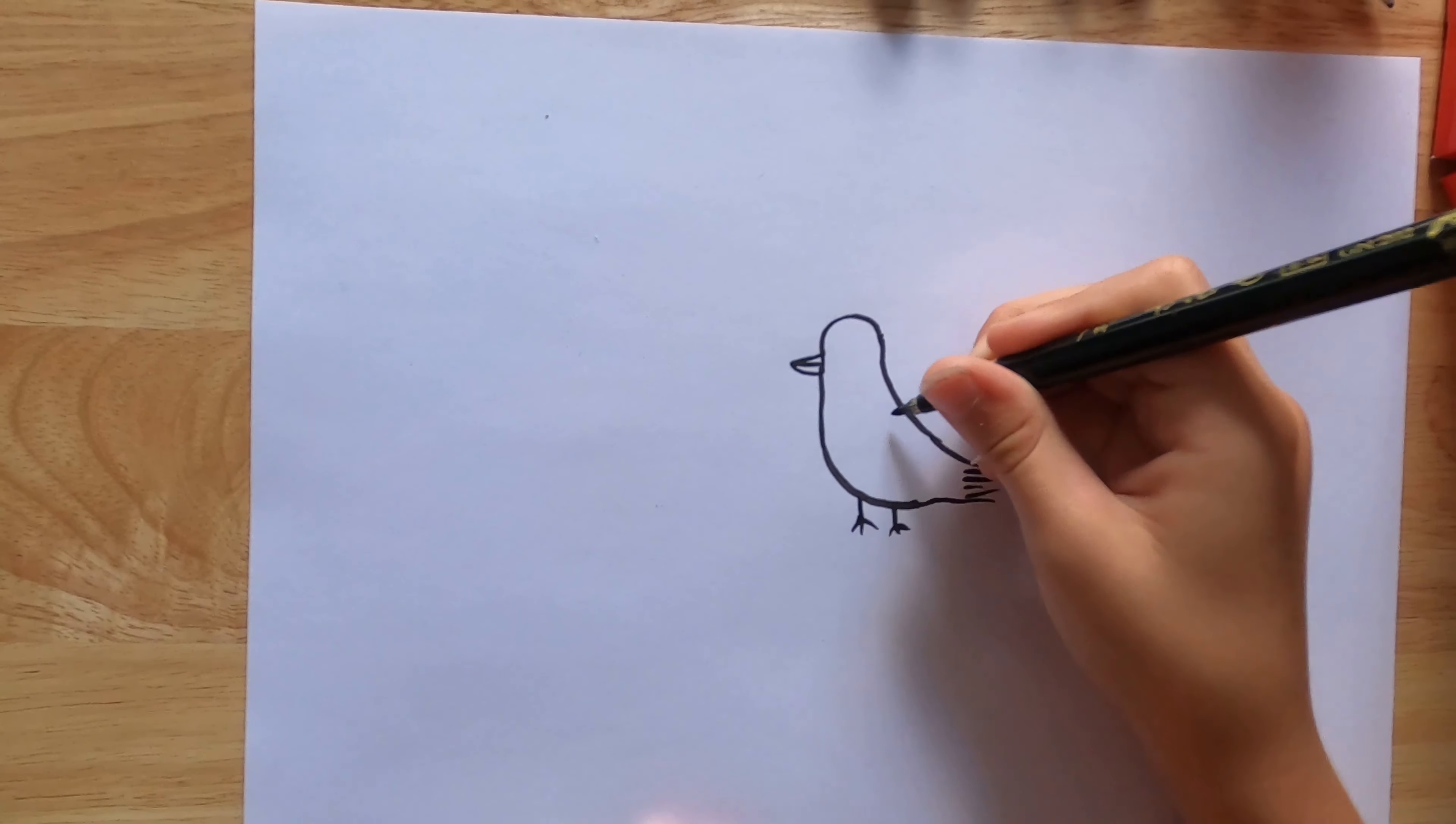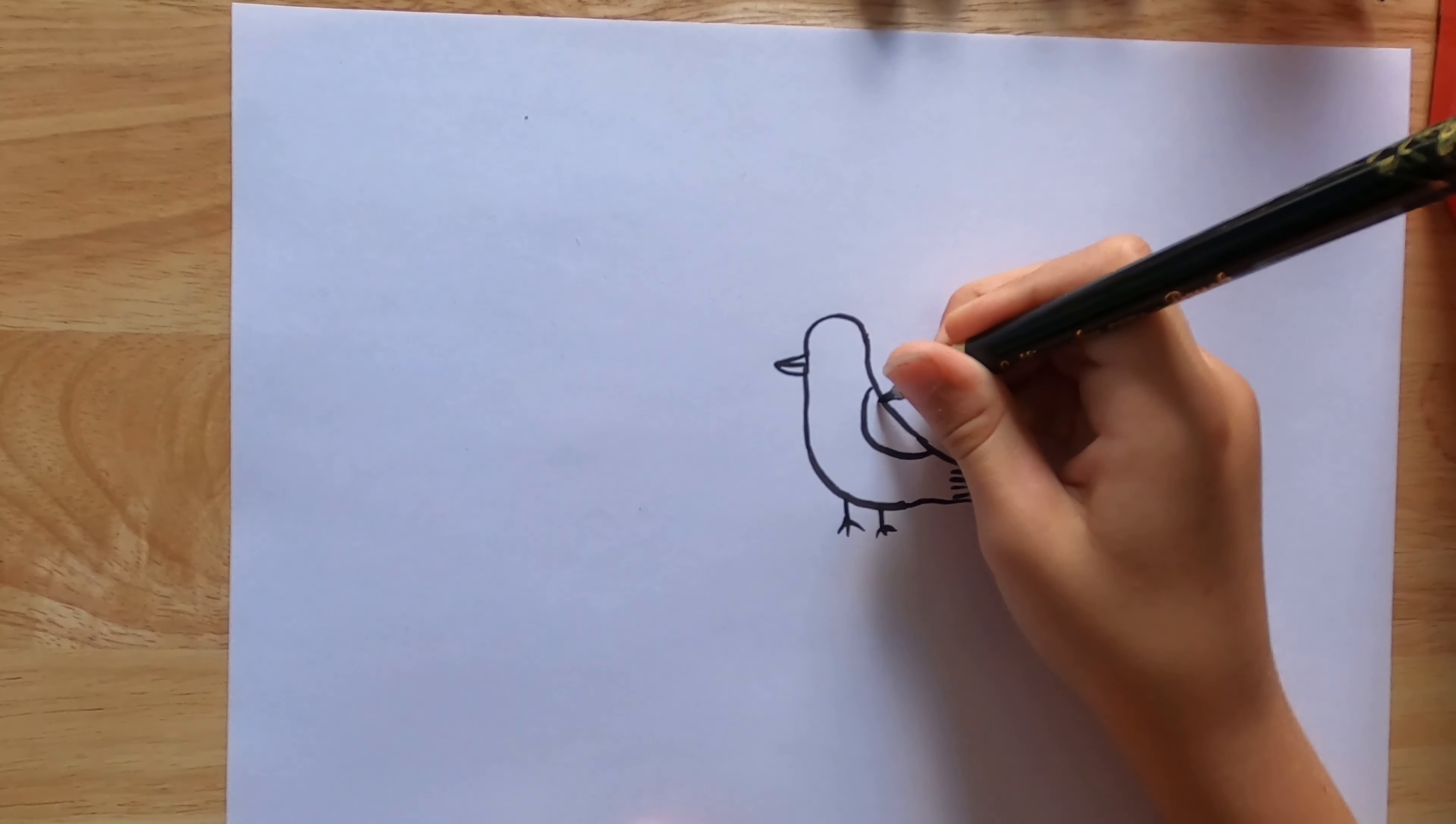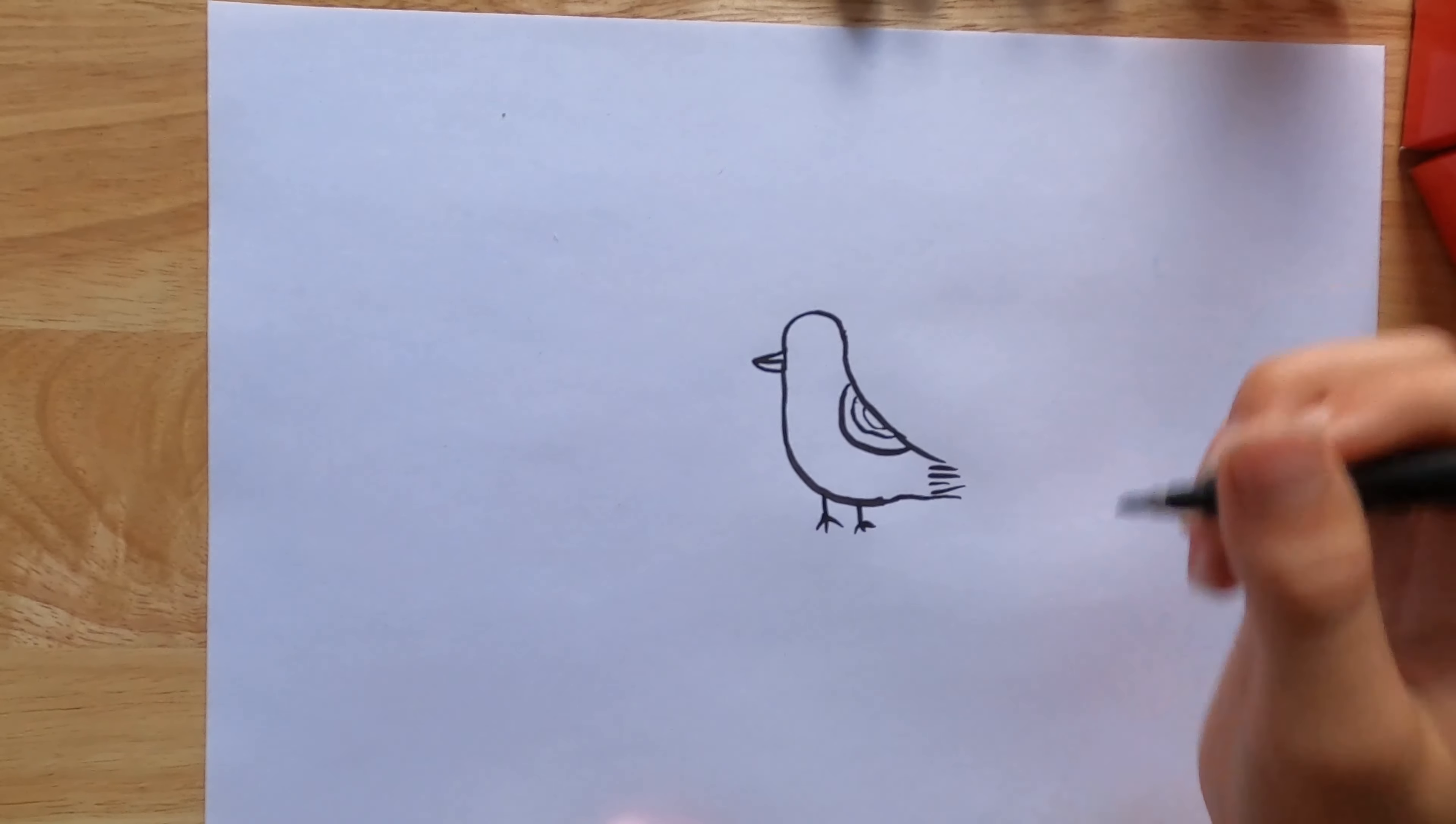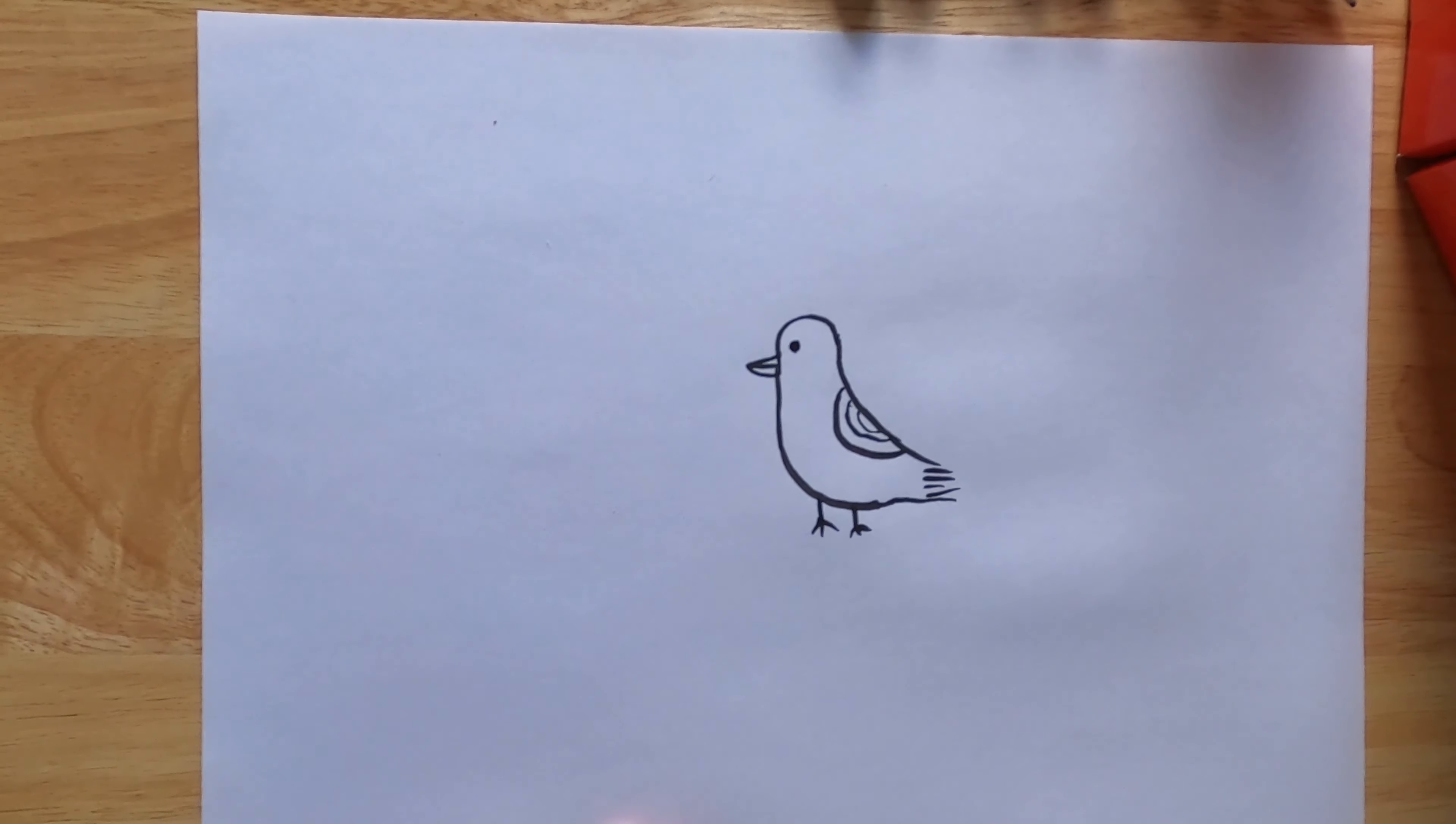Now we're going to draw the wing. A nice semi-circle. And then we're going to draw two inside it, getting thinner each time. Then we're going to draw the eye.